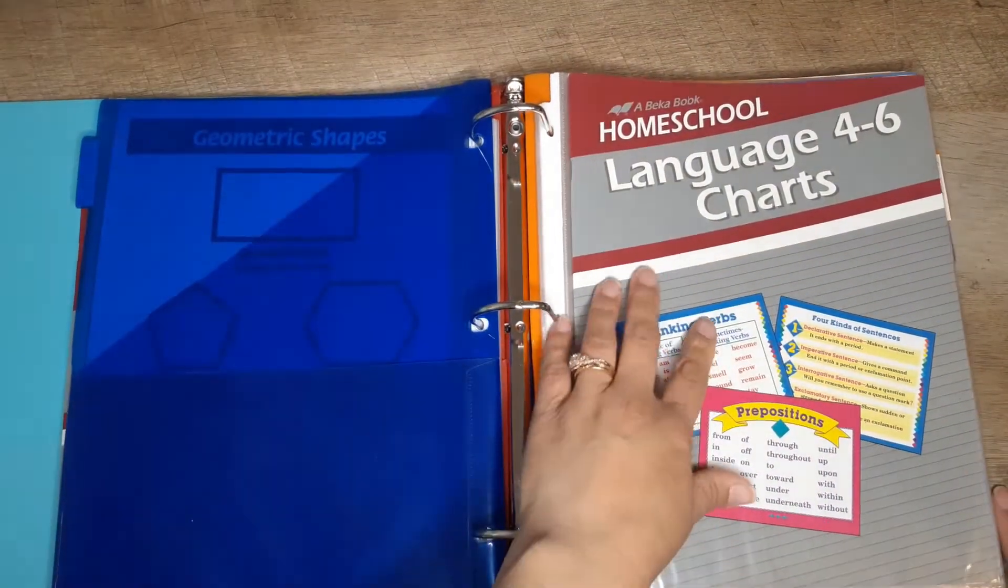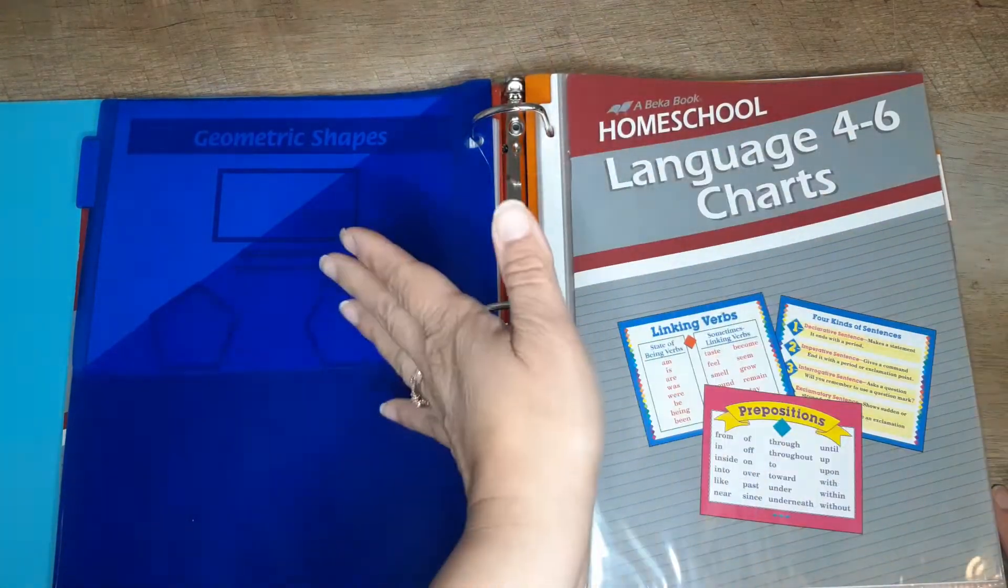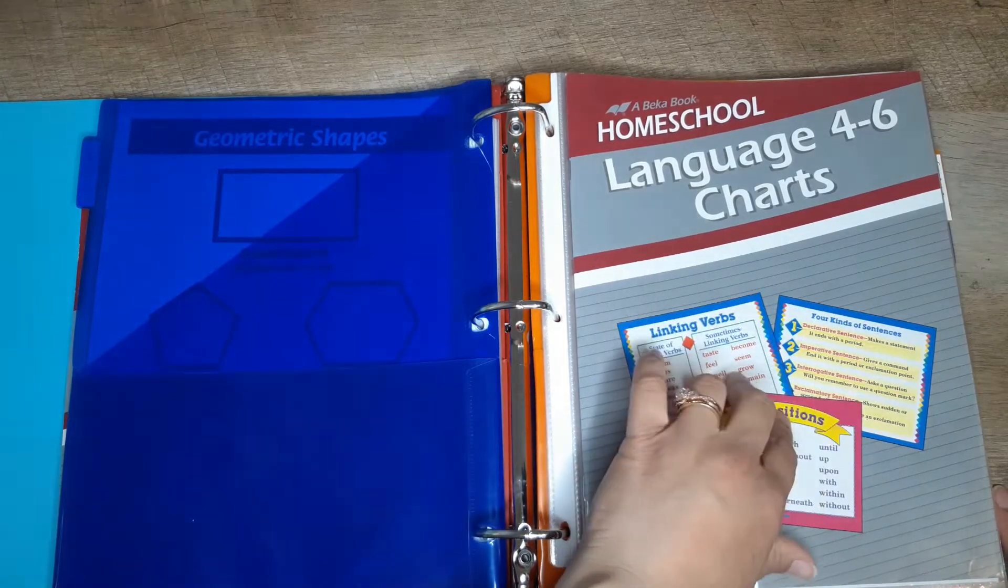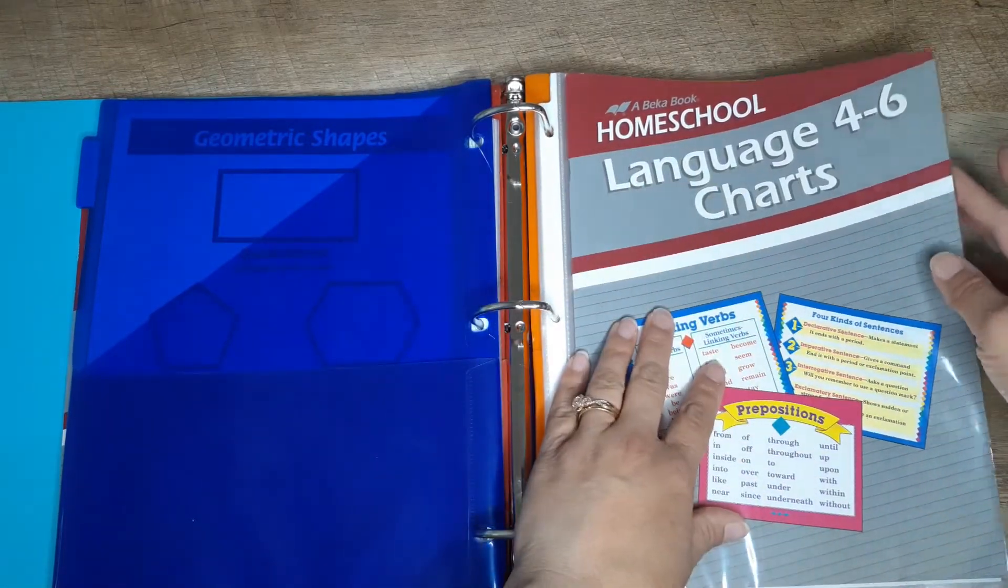Here's the language charts for grades four through six. Again I'm not sure, but I'm pretty sure you could get them in the complete kit. I've already had these for a little bit of time.